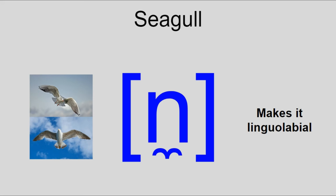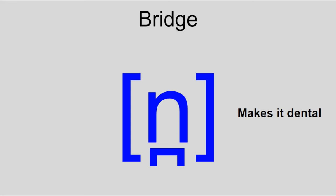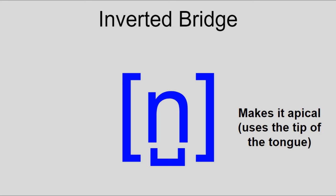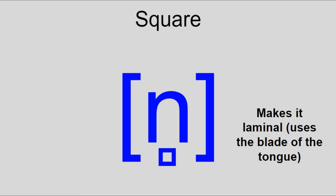Now about the diacritics that slightly reposition a consonant. All the tacks from the vowels can be used for consonants too, but consonants have some extra signs. The seagull — yes, that's what it's called — indicates a lingualabial consonant, and the bridge indicates a dental consonant. There are also the inverted bridge, which indicates an apical consonant (meaning the tip of the tongue is used), and the square, which represents a laminal consonant made with the blade of the tongue.